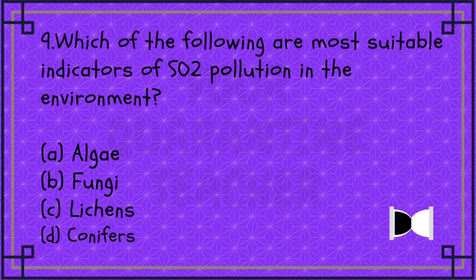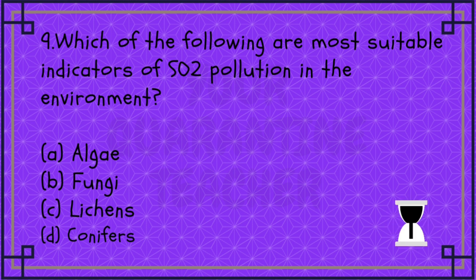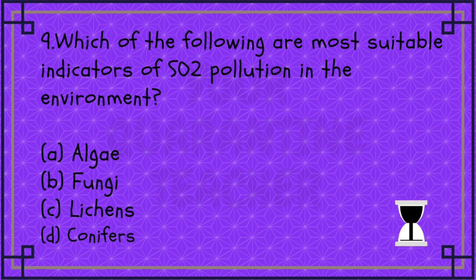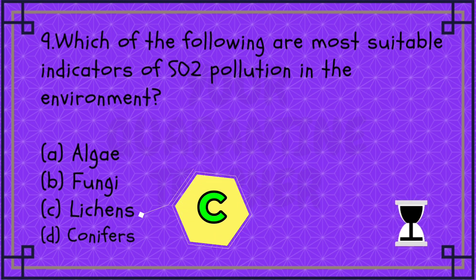Option C, Lichens, is the correct answer. Lichens do not survive in a polluted area. So for sulfur oxide pollution, Lichens are the main indicators.